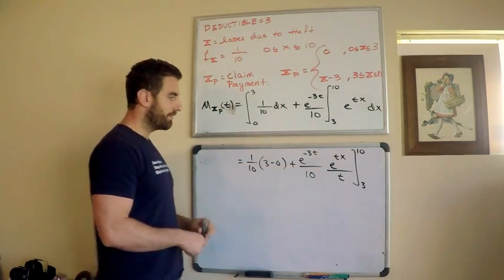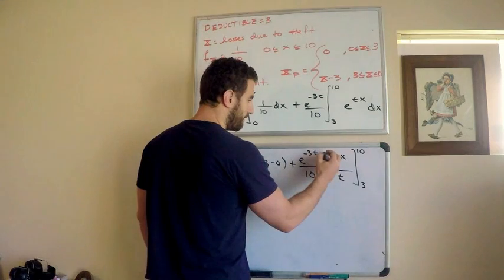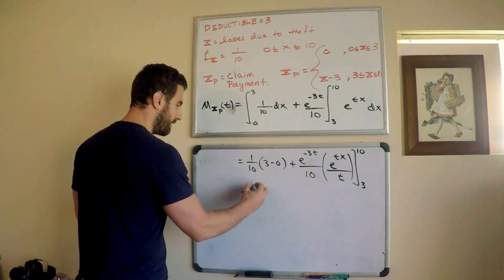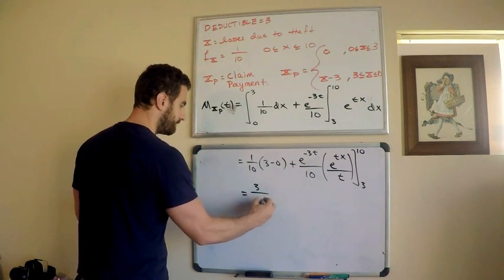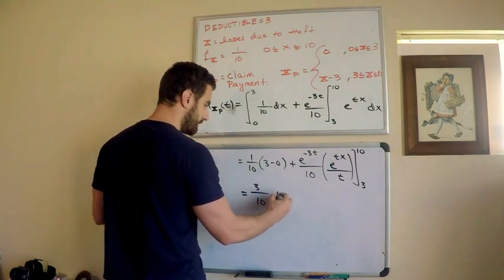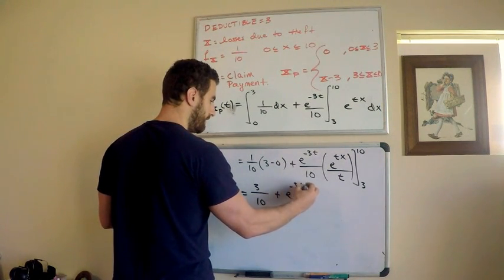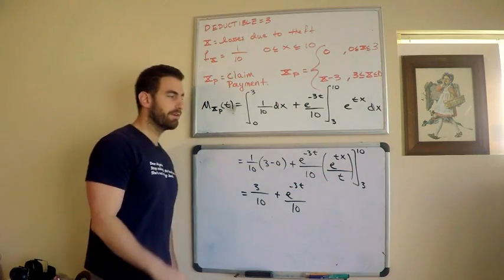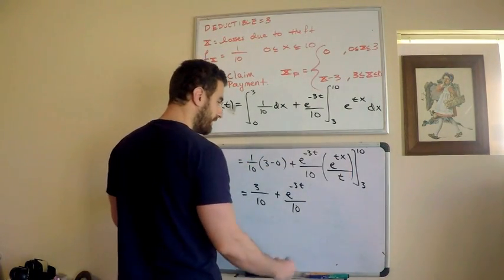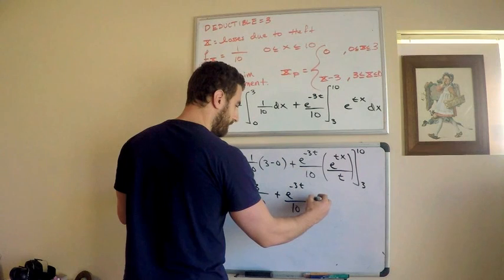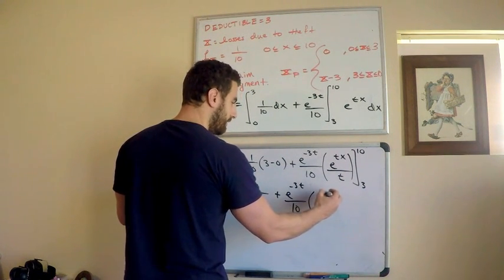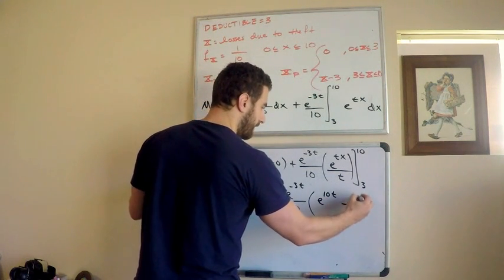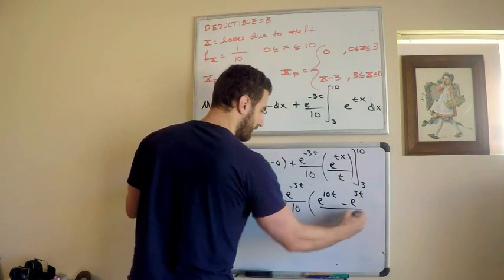Throw in these bounds of integration, and I'm only going to implement them for this piece. Only implementing them for that piece right there. So, this gives me now that I have 3 tenths. This part is 3 tenths. Plus e to the negative 3t divided by 10. And when I throw in the bounds of integration using the fundamental theorem of calculus, just plug them in for x. So, this looks like quantity e to the 10t minus e to the 3t all over t. So, we're technically there.